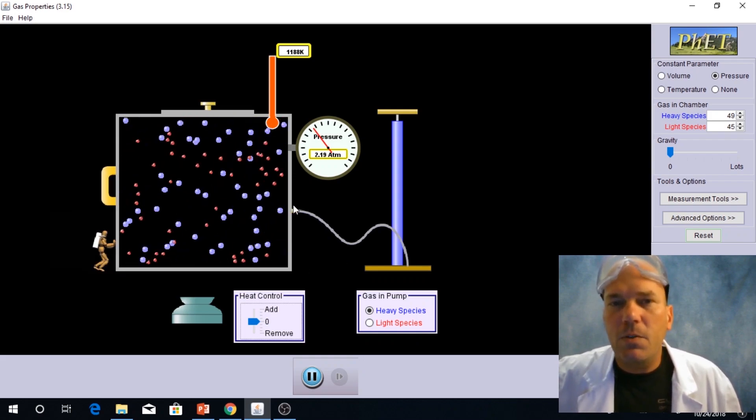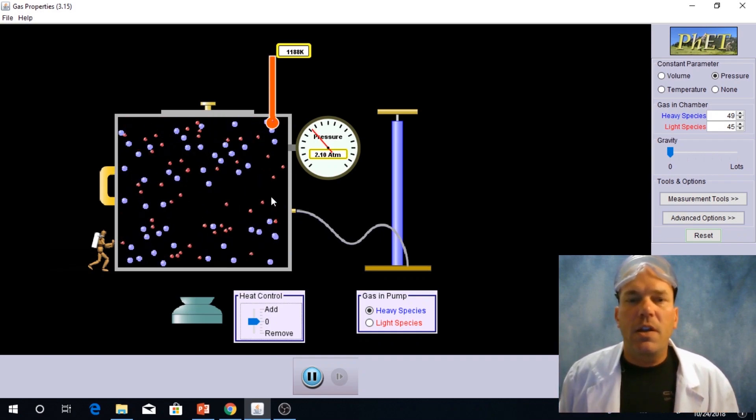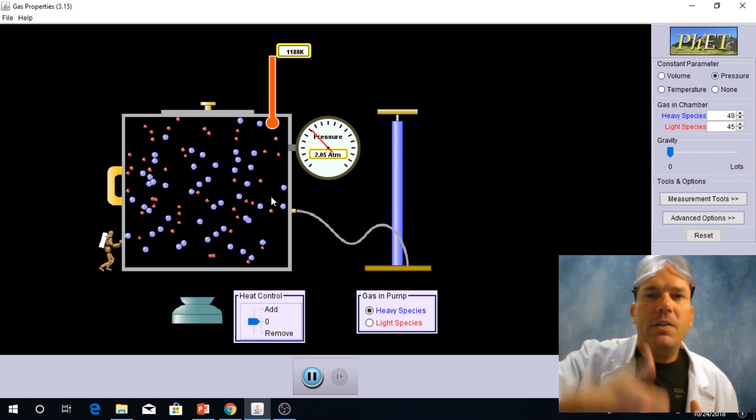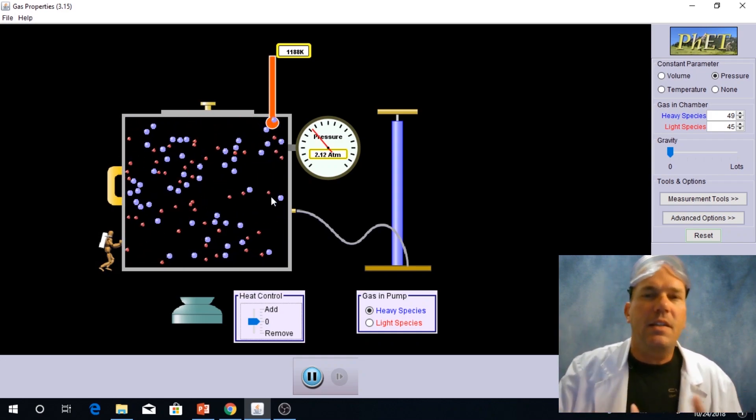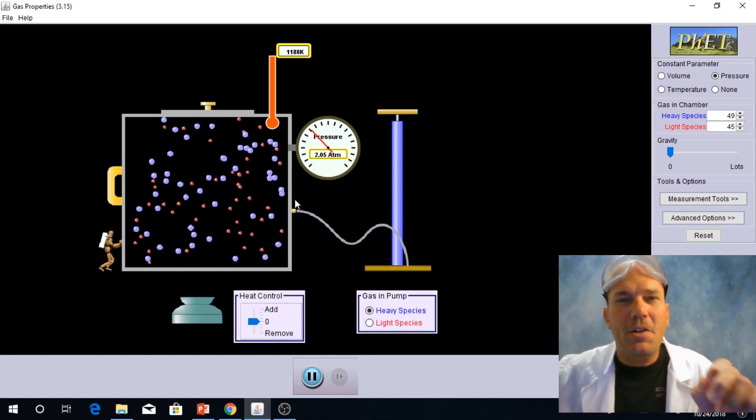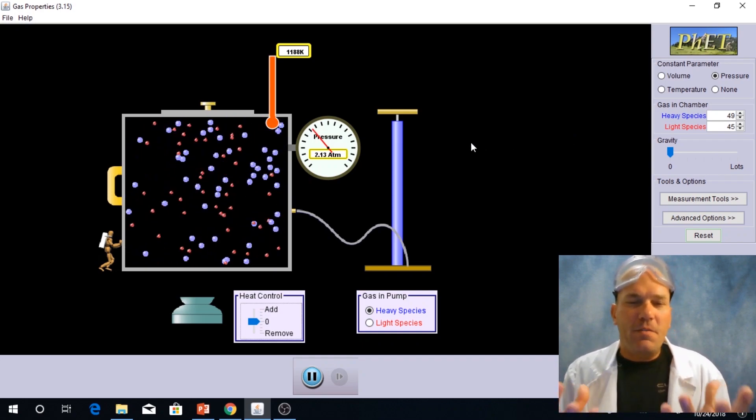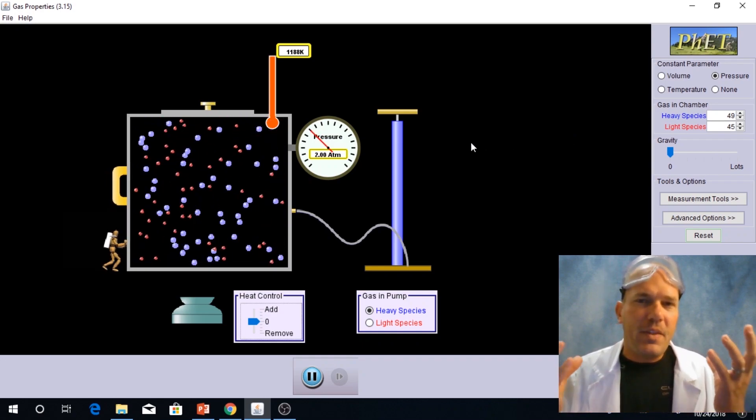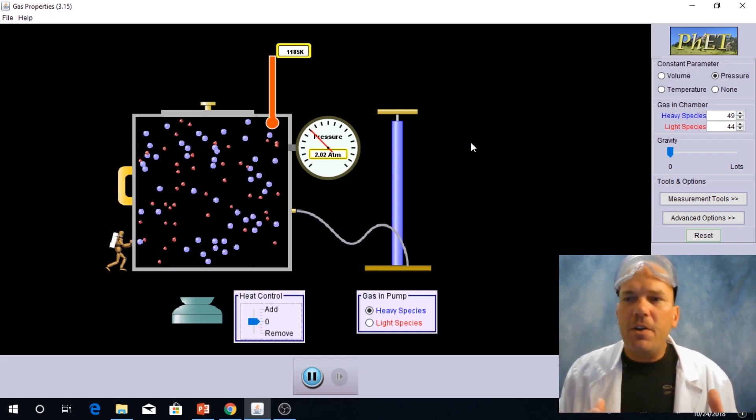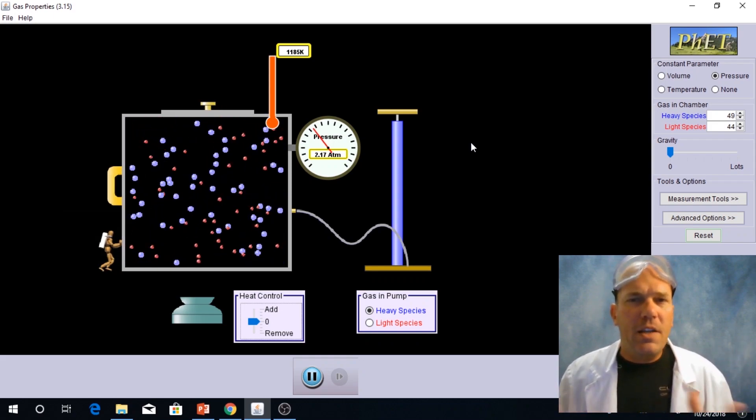So these are also directly proportional. As the volume gets larger, the temperature gets larger. As I add heat to the system increasing the temperature, we see the volume increasing if pressure is held constant. So to recap, we've shown in this first video how these three variables of volume, temperature, and pressure are interrelated.